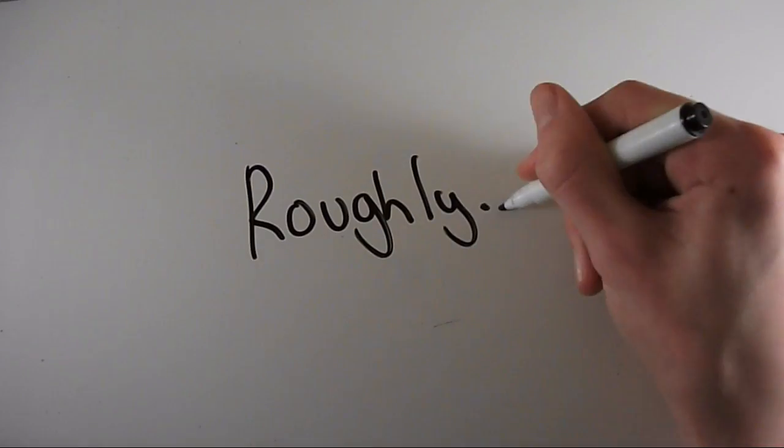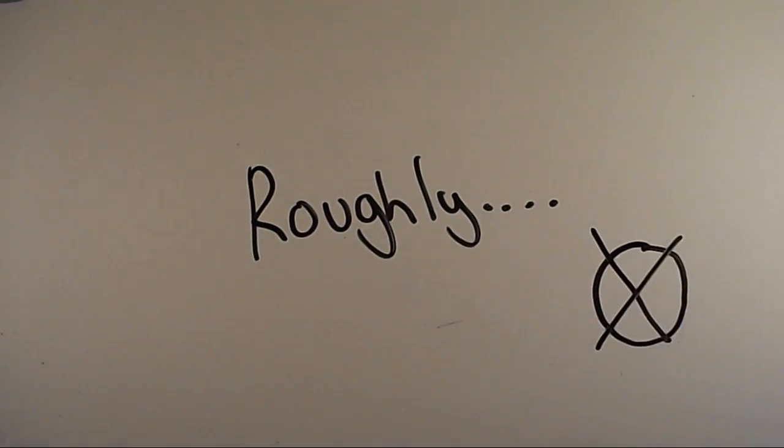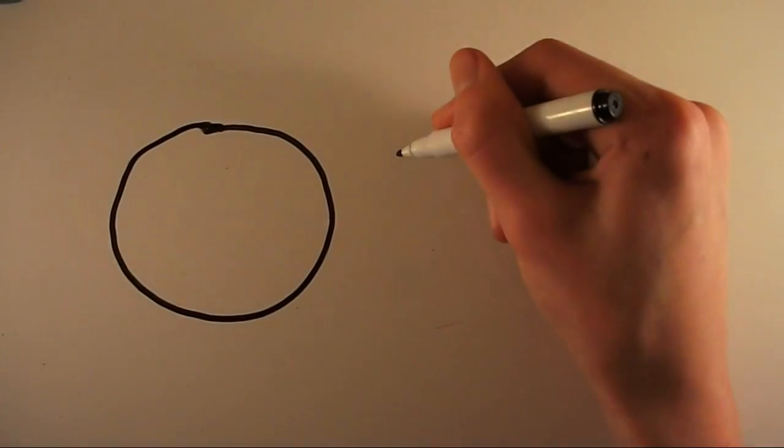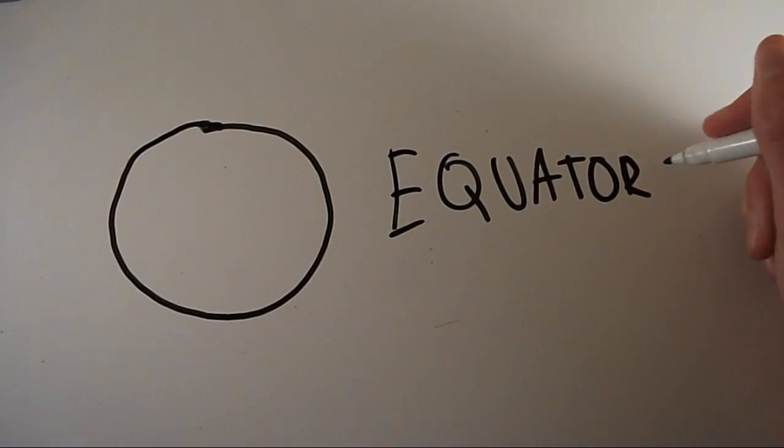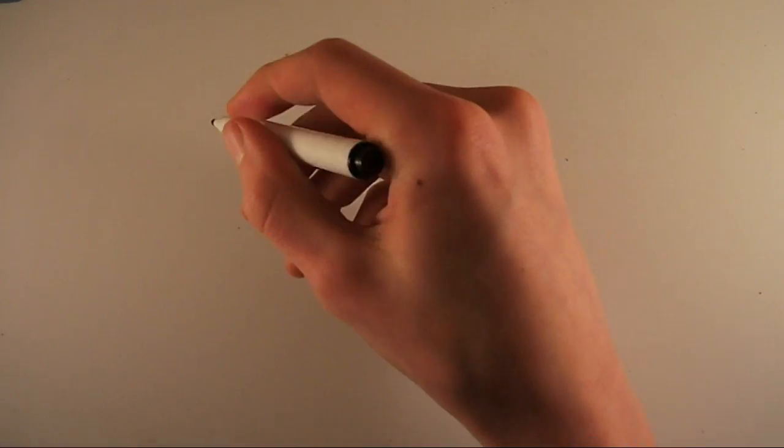I say roughly because planets aren't complete spheres, with the Earth not even being a complete sphere due to the Earth rotating on its axis which means Earth is an oblate spheroid. In our solar system, Saturn has the biggest equatorial bulge at 11,808 kilometers, while Earth is only 42.72 kilometers.